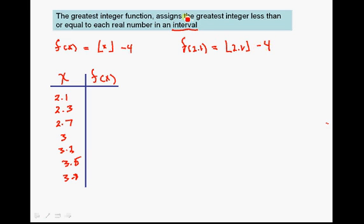The greatest integer less than 2.1 is just 2, so we have 2 minus 4, and that's equal to negative 2. So when x equals 2.1, f(x) equals negative 2.